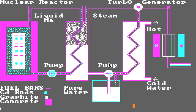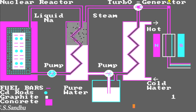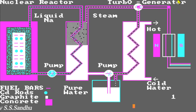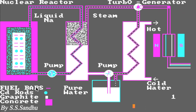Welcome to this interesting demonstration of a nuclear reactor. As you know, it converts nuclear energy to electrical energy. A nuclear reactor, formerly known as an atomic pile, is a device used to initiate and control a nuclear chain reaction or nuclear fusion reactions.